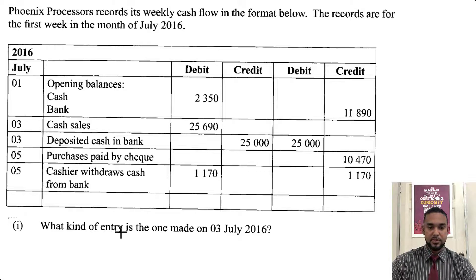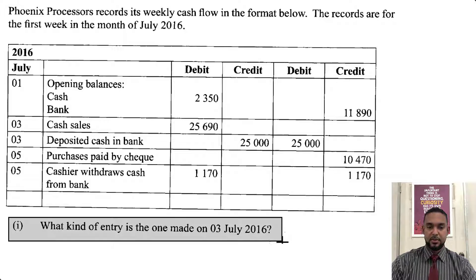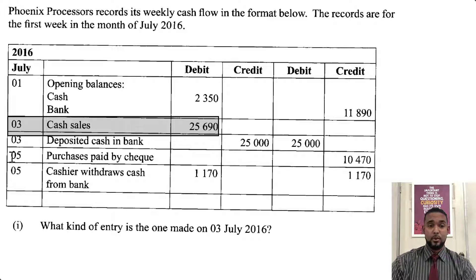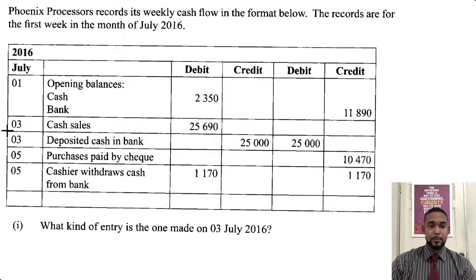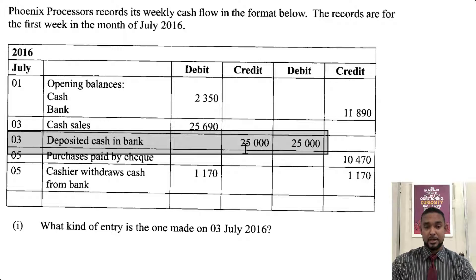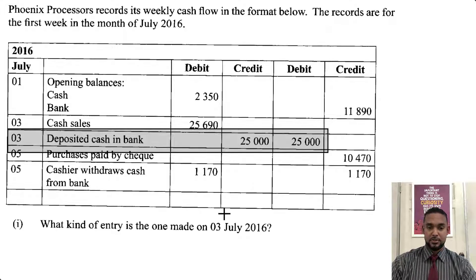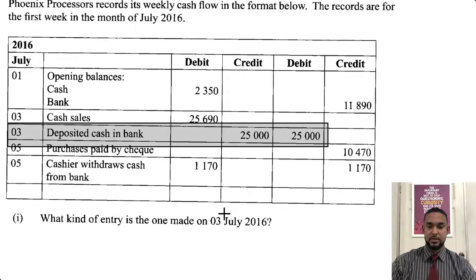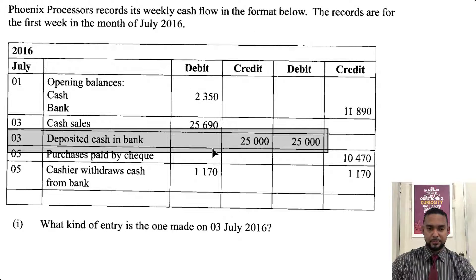The first thing they want is: what kind of entry is the one made on the 3rd of July 2016? We have two entries on the 3rd of July — we have a cash sale, which is a debit entry in the cash book under the cash column. But I think the one to which they were referring was this item here, which was a contra entry where you took money from cash and put it in the bank. So just so you can see — that was one mark, so it's not a very technical question.